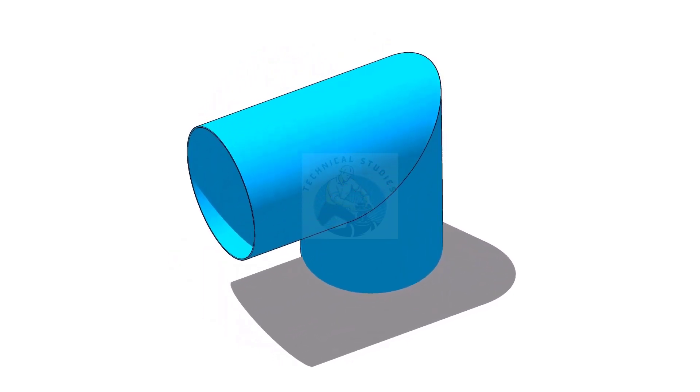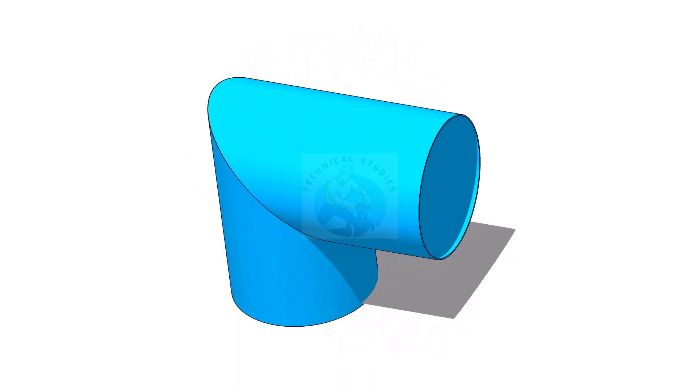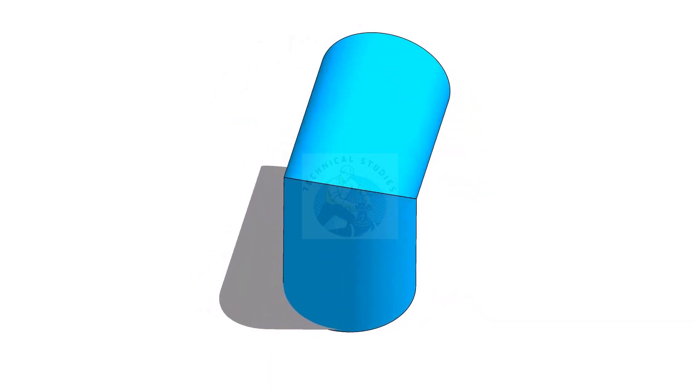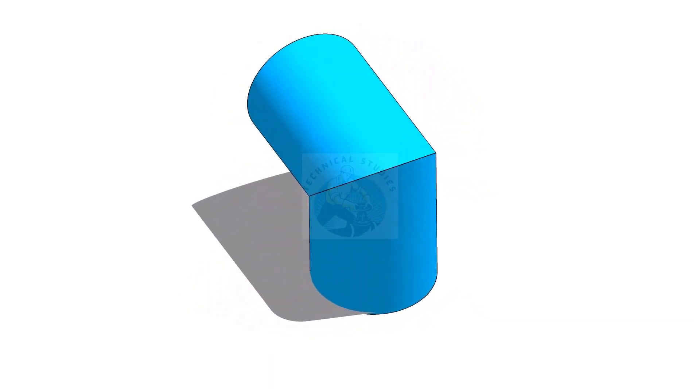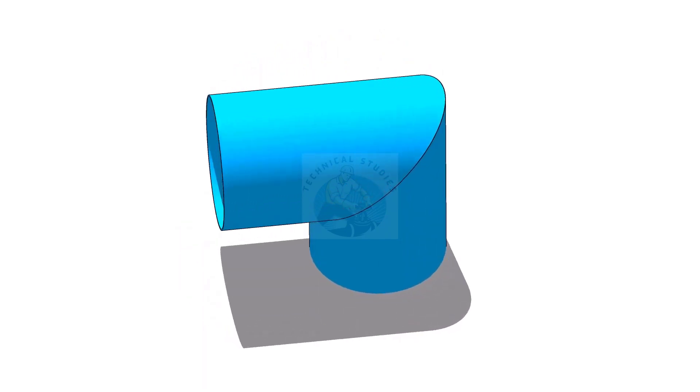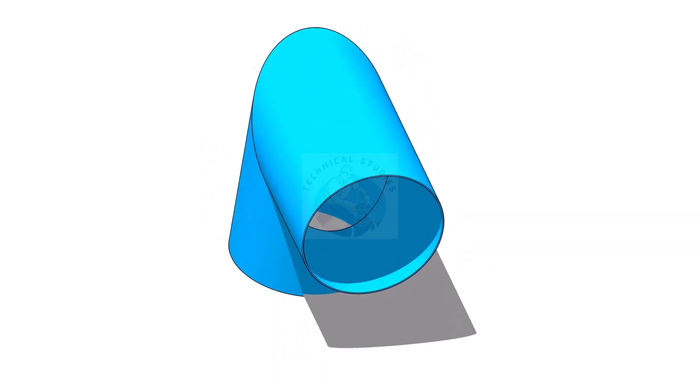Miter bends or miter elbows are very important in piping construction because sometimes the standard elbows cannot be used because of the situation or the high cost of ready-made bends. In this tutorial, I want to teach you the basics of miter fabrication. If you have any doubts or comments, please write down.